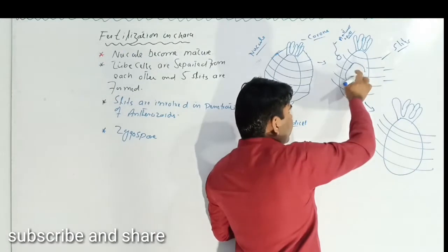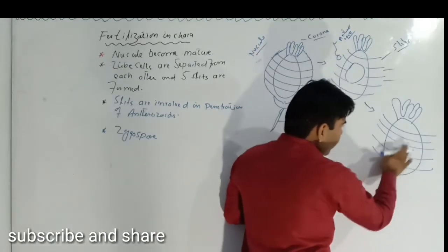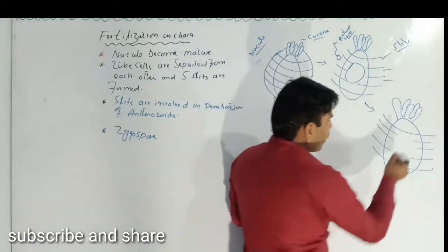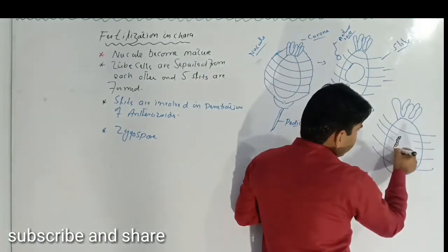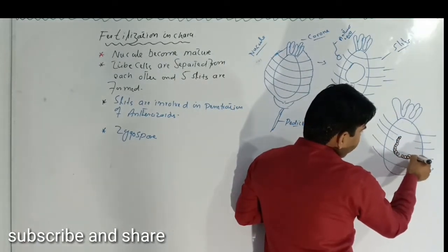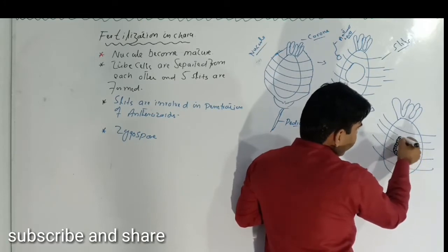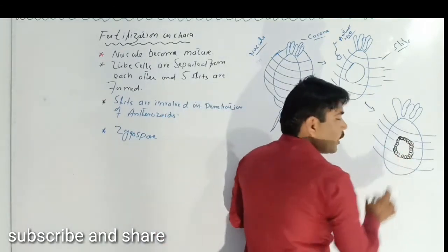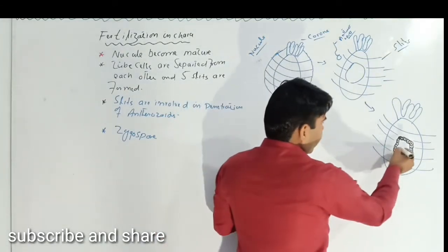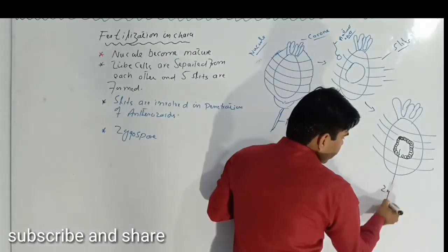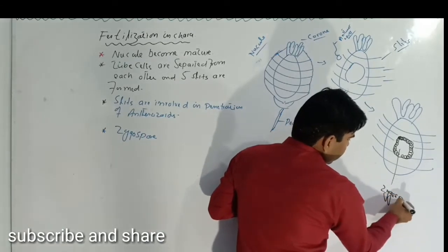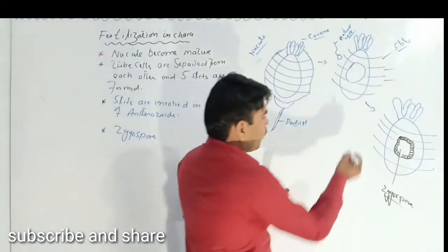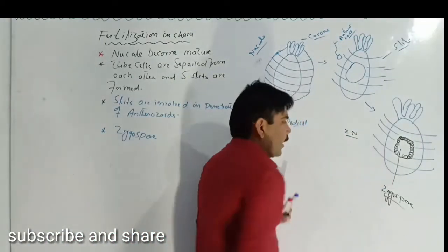The antherozoid is now fertilized, and after fertilization the wall becomes thick. Now it is not known as the oosphere but as the zygospore, because it is now a diploid cell. So now a zygospore has formed which is diploid.